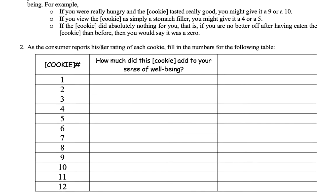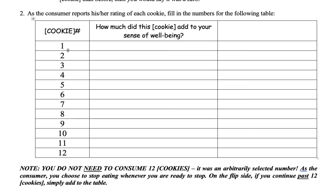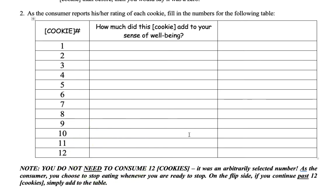It is possible that if you consume things, sometimes you feel worse after consuming them, so you could have a negative number rating. In the handout I have set up a chart for quantities from 1 to 12. You do not need to consume a dozen of whatever you're consuming — I just chose an arbitrary number. You can consume less.